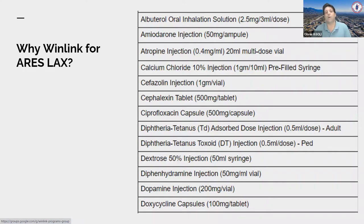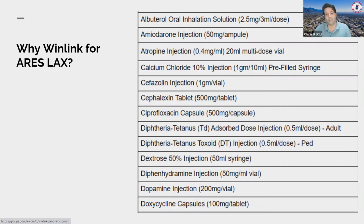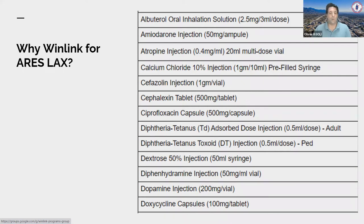We looked at FLDigi and WinLink — we still do FLDigi quite a bit — but one thing we ran into during our regular weekly digital nets is that FLDigi sometimes drops data in spite of a good checksum, and that's unacceptable. WinLink, on the other hand, uses ARQ — Automatic Repeat reQuest — so you either get the message 100% or not at all. If you don't get it at all, you can find a different path. That's why we settled on WinLink.